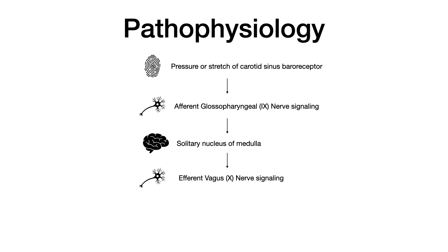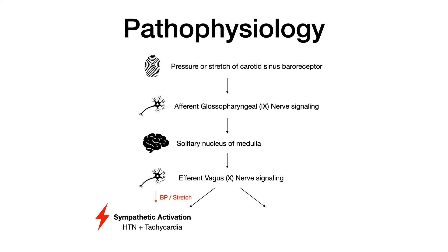Depending on whether we're sensing too much stretch or not enough stretch, you have differing activation of either the sympathetic or parasympathetic nervous system. If there is not enough stretch — meaning blood pressure was low or there wasn't enough stretch at the pressure receptor — then you would activate the sympathetic nervous system, resulting in increased cardiac output. On your exam you'd see things like hypertension and tachycardia.